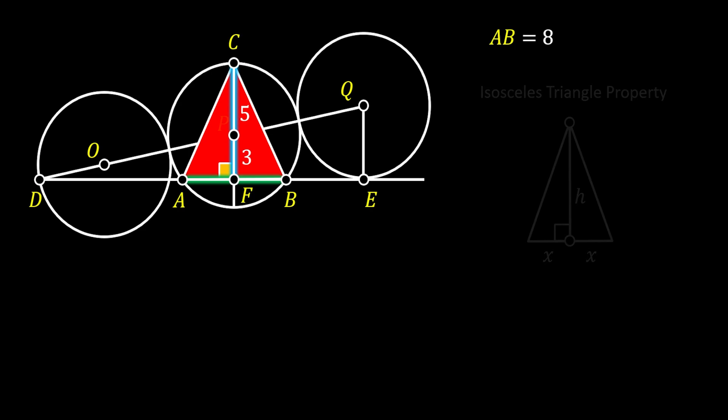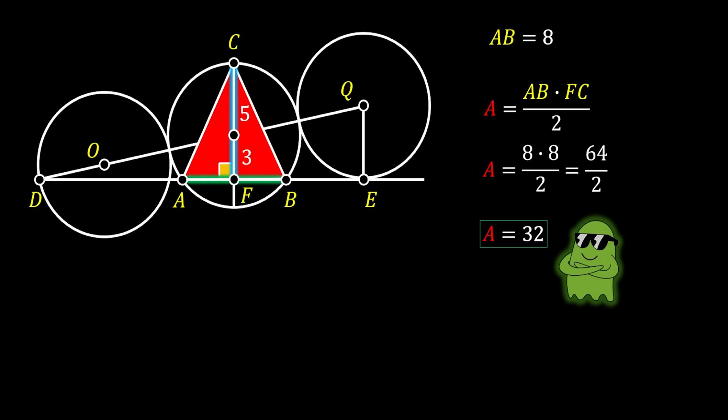Now, it's pretty easy for us to find the area of this triangle as the half of the product of the base and the height, so we can just substitute our values for AB and FC, which equals 64 over 2, which means that the area of our wanted red triangle is equal to 32 squared units, and this is our solution.